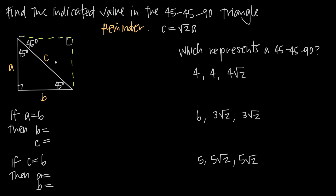The reason it's useful to know about this special 45-45-90 triangle is because if we need to find the length of the diagonal of a square and we happen to know one of its side lengths — which is the same for all four sides — all we need to do is multiply the side length by the square root of 2 to get the length of the diagonal. If the side length is s, then the diagonal is square root of 2 times s. That's always the length of the diagonal because of the Pythagorean theorem.